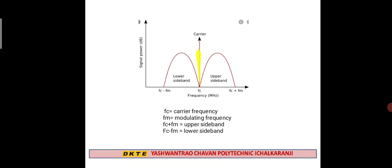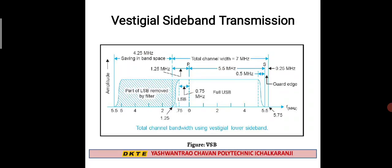Checking the frequency spectrum: we have the carrier, upper sideband, and lower sideband. Both sidebands contain the same information, so the other sideband can be used to reduce bandwidth and power requirements. However, for lower frequencies containing the most important information, full suppression is not done. Phase distortion would occur, so only some part of the lower sideband is suppressed. The resulting signal is the carrier, upper sideband, and some part of the LSB.